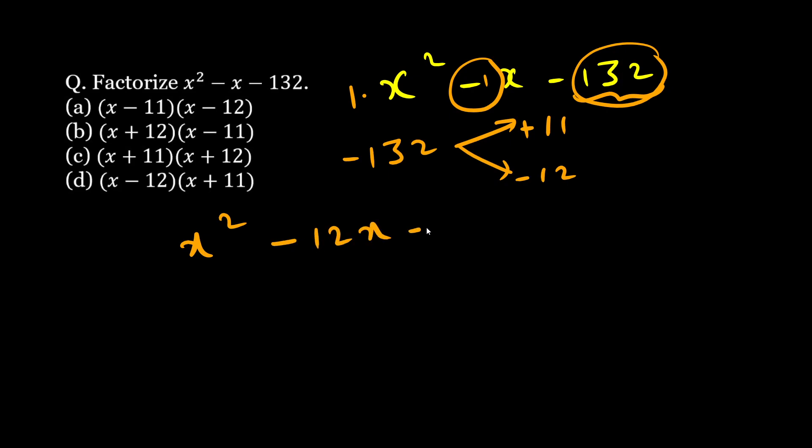Now from here I can take x common and here I can take 11 common. From here I can rewrite this as x plus 11 times x minus 12, so x minus 12 into x plus 11. Option D.